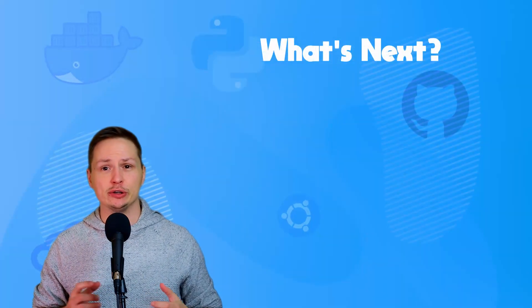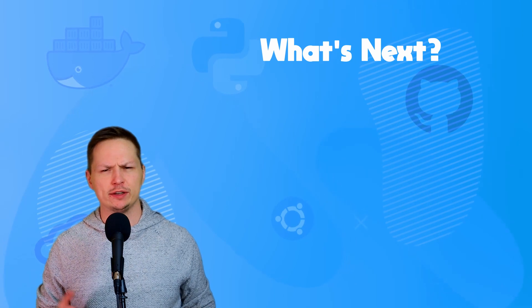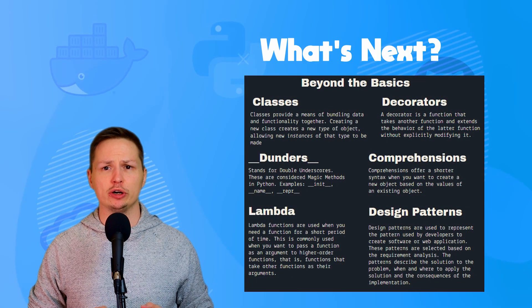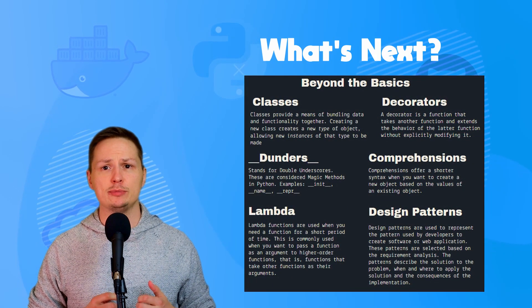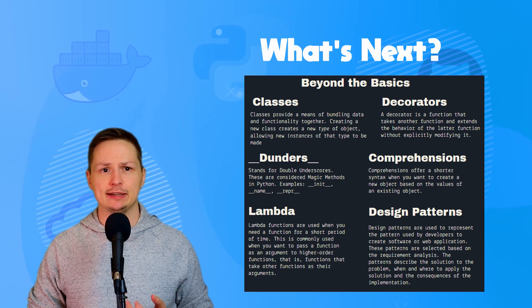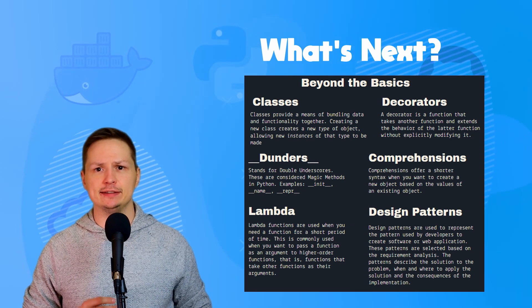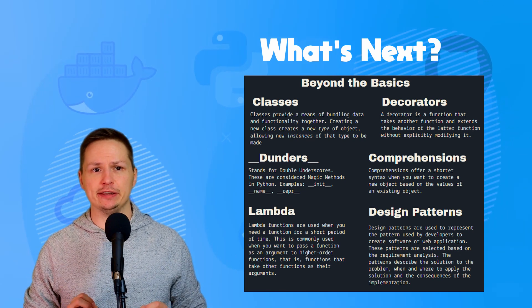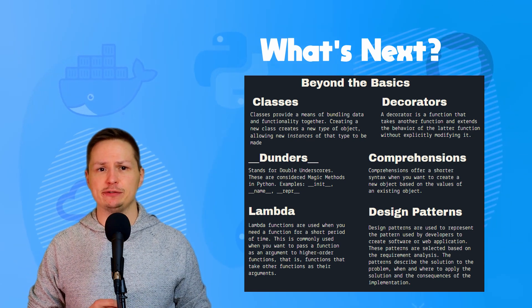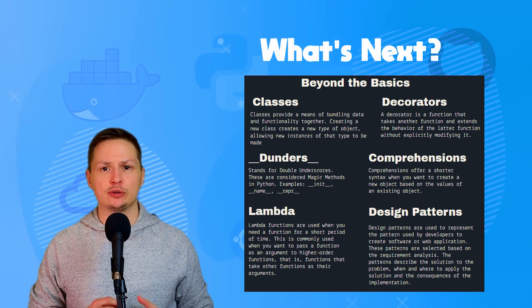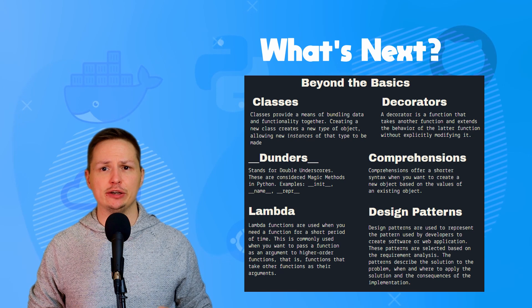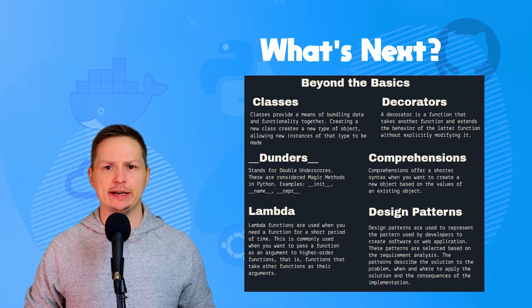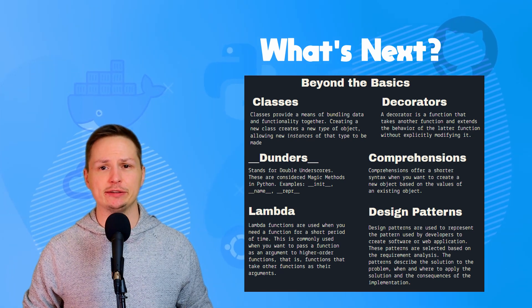Now you're a level five Python programmer — what's next? Further topics to learn include object-oriented programming, classes, design patterns, comprehensions, dunder or magic methods, lambda functions, and decorators. I'll try to do another video on these more advanced topics in the future, but you can go out and research them if you'd like.